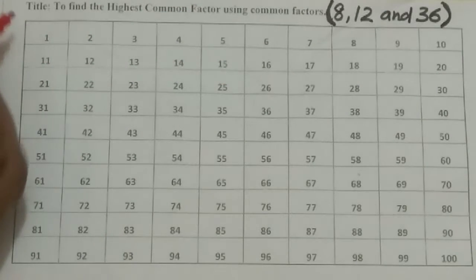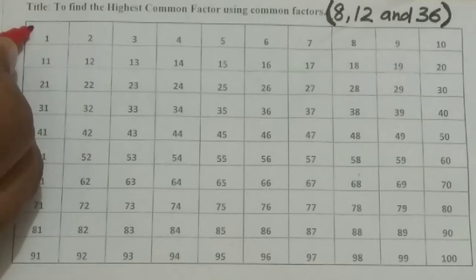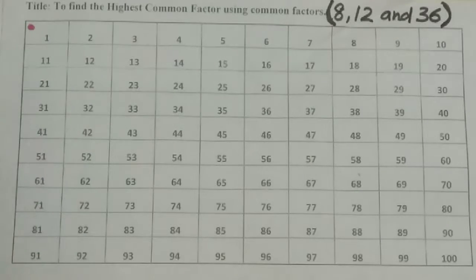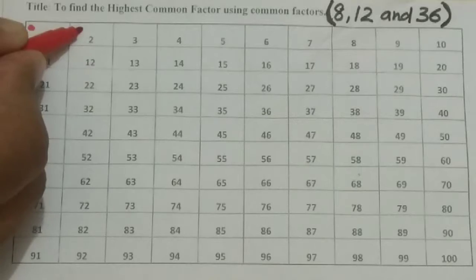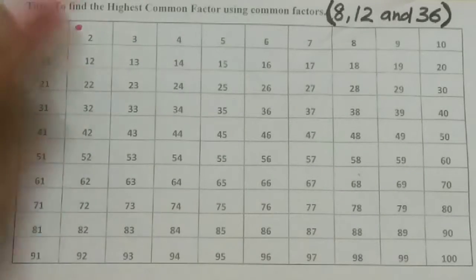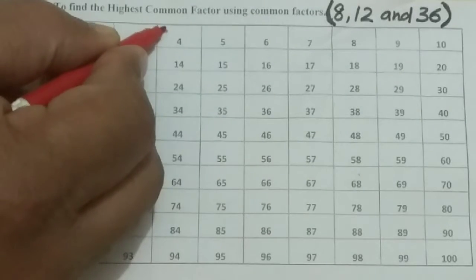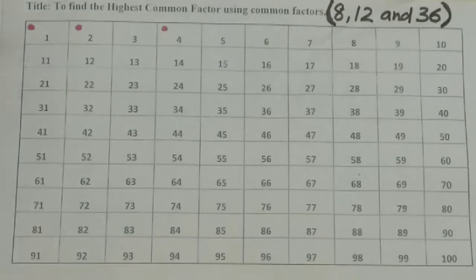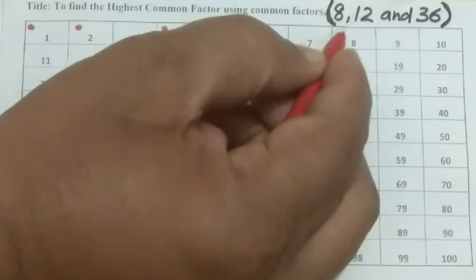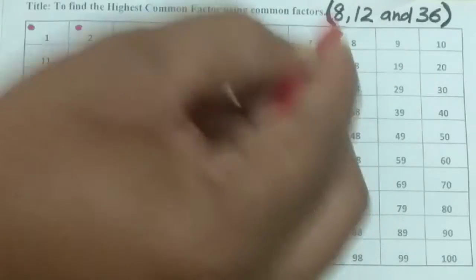So this red sketch pen I am using for 8. So 8 means 1 is a factor of 8, you can divide it by 1. Then 2 also. 3 we can't do. 4, yes, 4 also. Then 5 no, 6 no, 7 no. So 8. So 8 becomes this one.